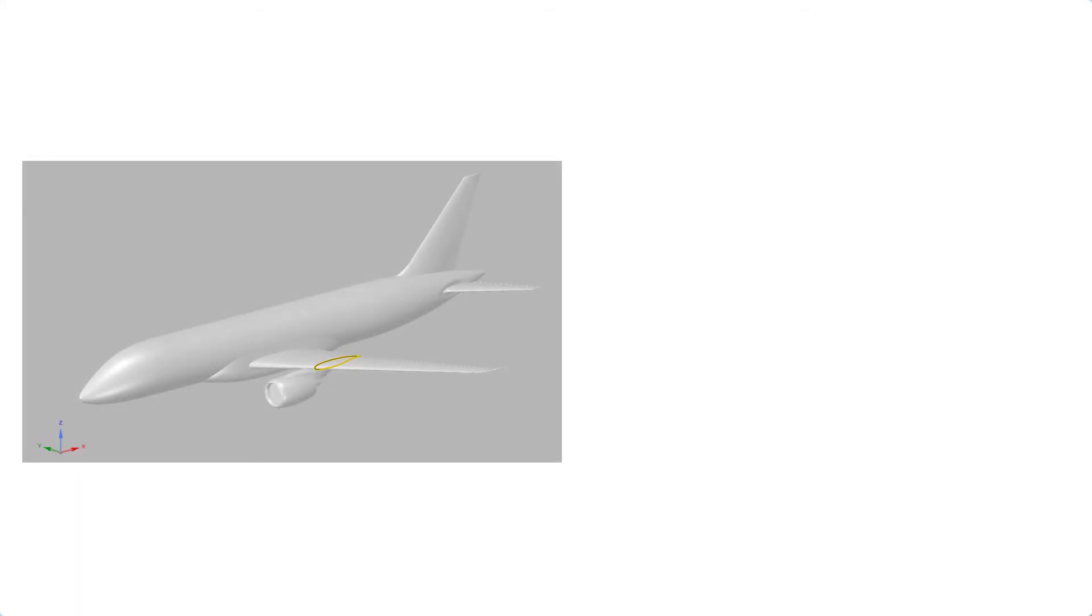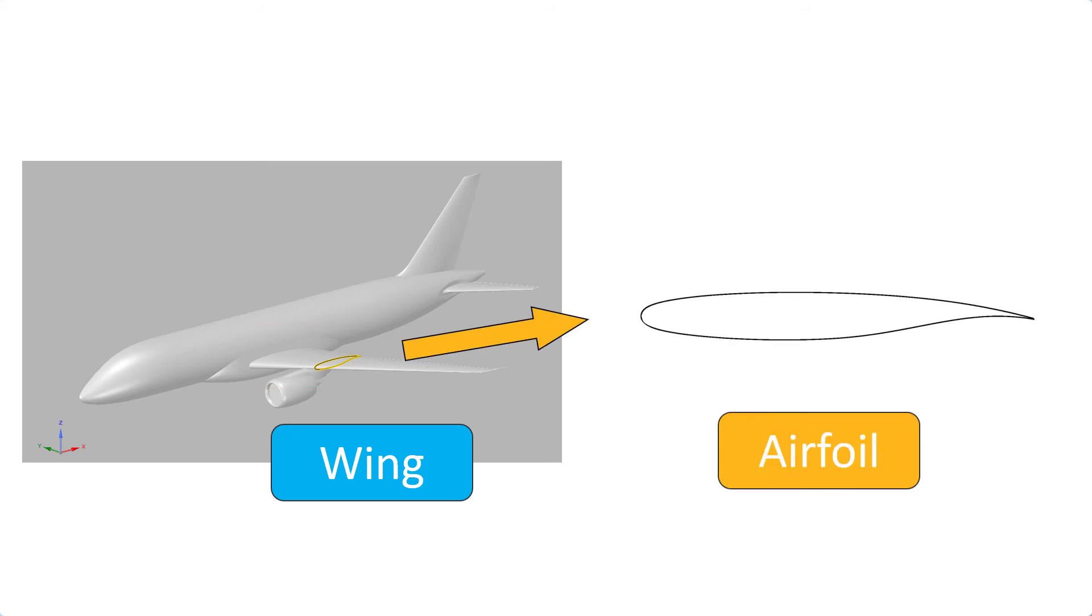Now, we can introduce some additional relevant terms. The wing is what keeps the airplane in the air, like the wings of birds. If we cut the wing, we get a shape called an airfoil. This shape is different from airplane to airplane. However, it's optimized to reduce resistance and keep the airplane up in the air.